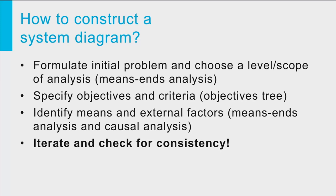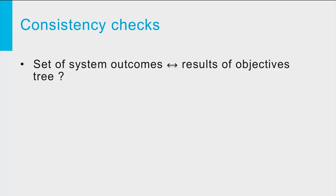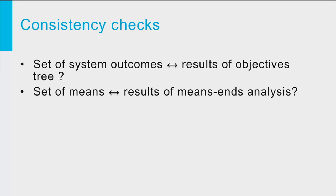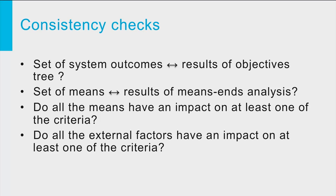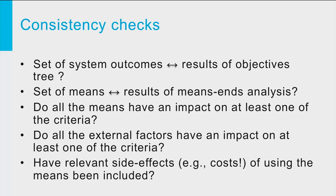The following questions will help you check the completeness and consistency of your diagram. First, does the set of system outcomes at the right-hand side of your system diagram correspond with the set of criteria you found at the bottom of your objectives tree? Second, does the set of means at the left-hand side of your system diagram match the conclusions of your means-ends analysis? Third, check whether all the means have an impact on at least one of the criteria — if not, the means may very well be not relevant at all. Fourth, check whether all the external factors affect at least one of the criteria. And fifth, have you identified and included relevant side effects of the means? For example, the costs or other negative side effects of using the means are often forgotten.